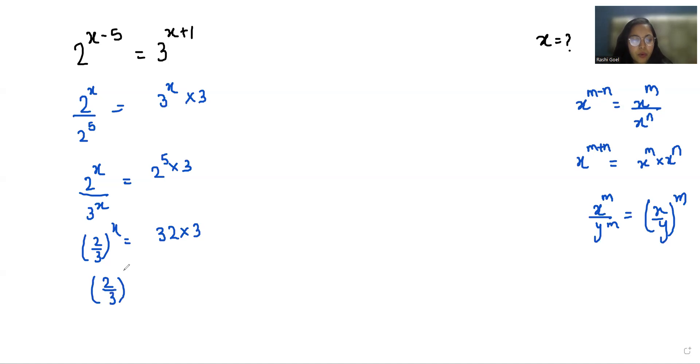Now (2/3)^x equals 96. I'm taking log on both sides.